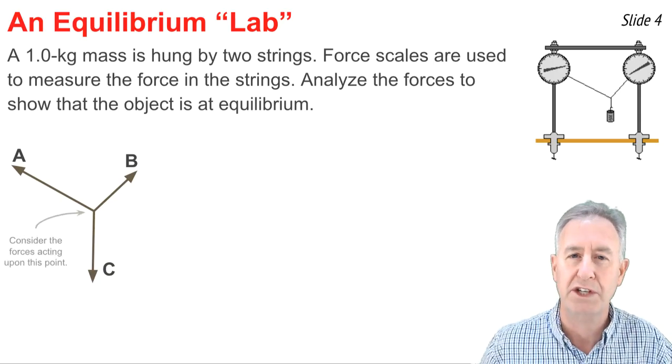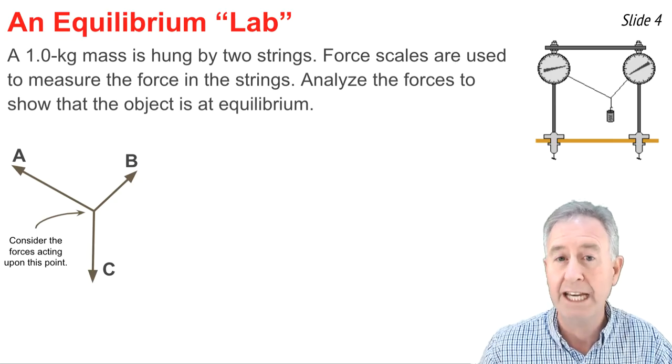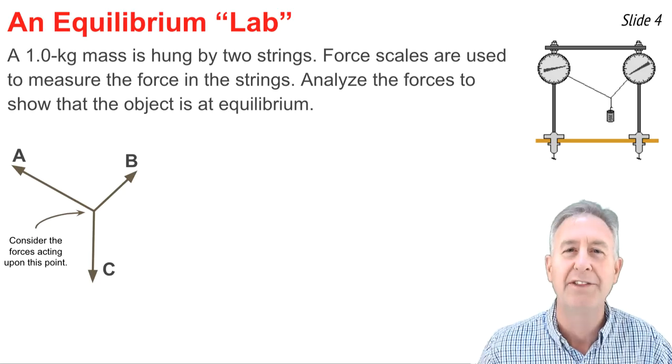You see the situation shown above in a diagram. Now, there are three forces acting upon the point where those three strings come together, and the three forces are gravity down and then two tension forces that are angles to the horizontal.